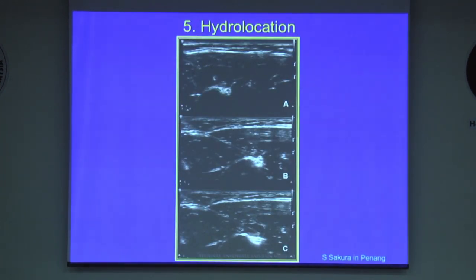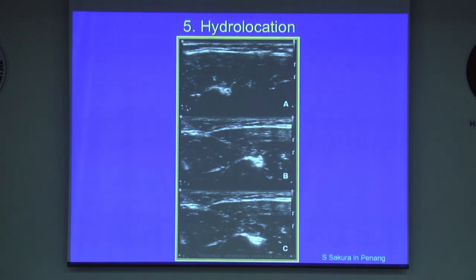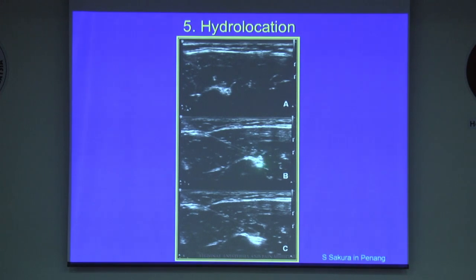Another measure to locate your needle is the hydrolocation technique. You insert a small amount of local anesthetic and see the signs of spread to indicate where the tip position must be. Here, a 22-gauge needle is inserted toward the musculocutaneous nerve, which is not clearly seen. But when a small amount of fluid is injected, that can tell you where the needle tip is. You can confirm the location next to the nerve.